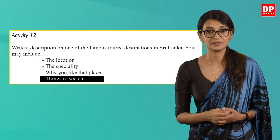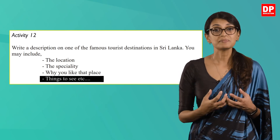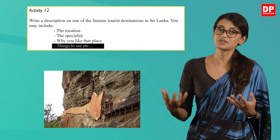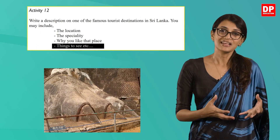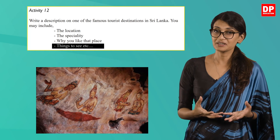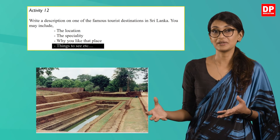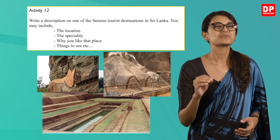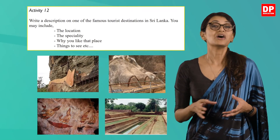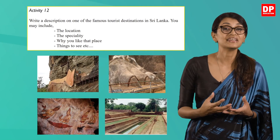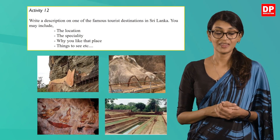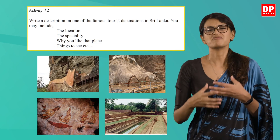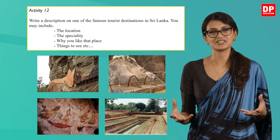For example, if you write about Sigiriya, you can refer to the frescoes, the lion paws, the artwork, the pool in the garden complex and the gardens. The pictures should give you an idea of what to include in your description. Don't forget to include adjectives and some vivid description too.